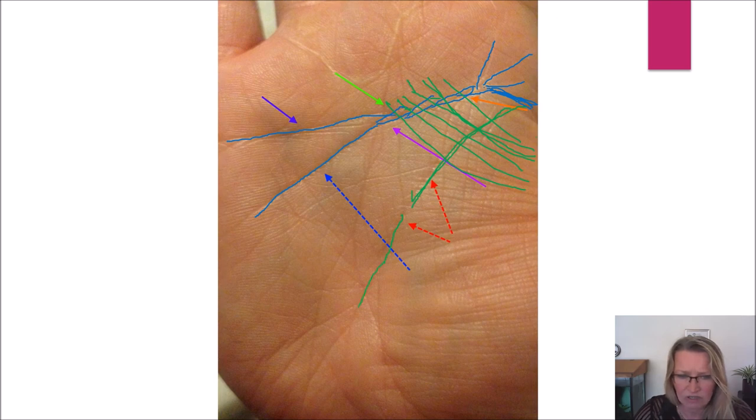And there is a fork in the lifeline, which also always depicts some kind of a decision. Sometimes it can denote travel, change in career, it can denote many things, but in most cases it is denoting a change. And that's what I wanted to also point out.